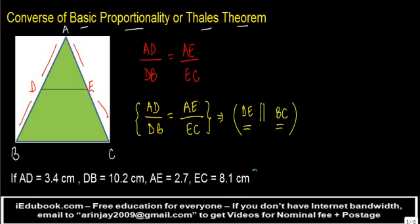Now let's look at one question which we have designed in this particular case. Here it says that if AD in this particular triangle is equal to 3.4 cm, DB is equal to 10.2 cm, AE is equal to 2.7 cm, and EC is equal to 8.1 cm, prove that DE is parallel to BC.